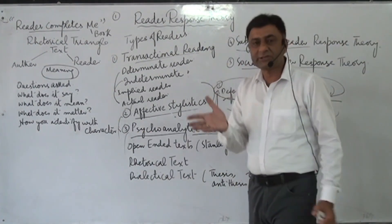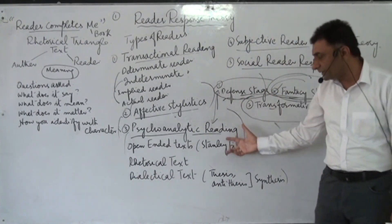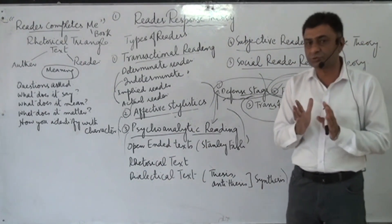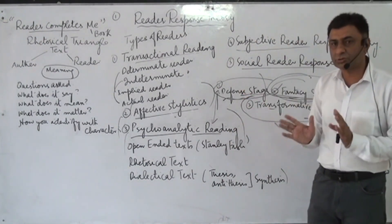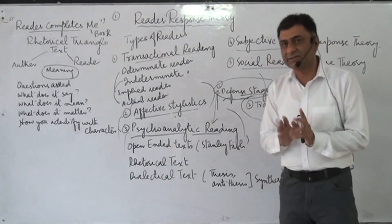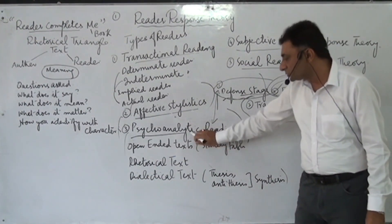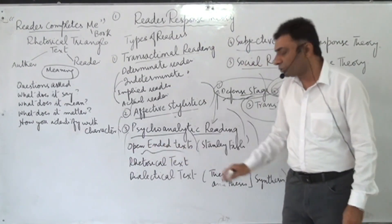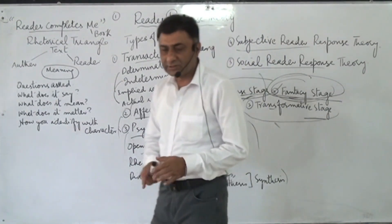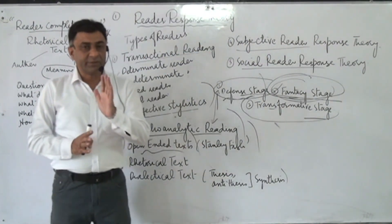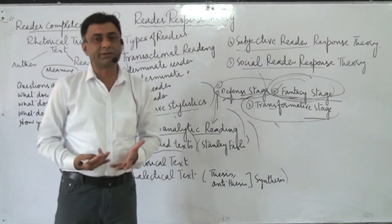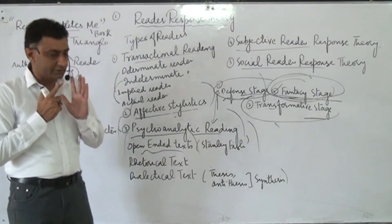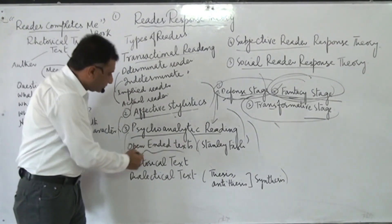Concerning types of texts, some novels, dramas, short stories, and poetry are open-ended, allowing multiple interpretations, while closed-ended texts have only direct interpretations. According to Stanley Fish, a critic of reader response theory, a text must be open-ended, not closed-ended — it must challenge the reader to discover what is actually in it, rather than providing direct meaning. When the text challenges the reader, the reader tries to find the meanings.